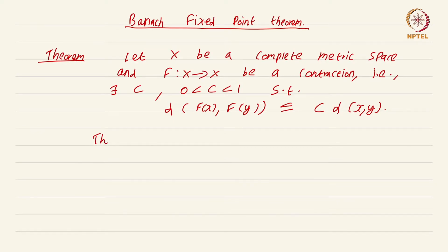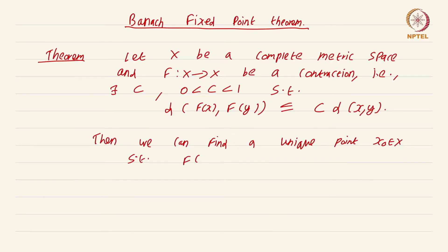The conclusion is then we can find a unique point x₀ in X such that f(x₀) = x₀. So there is a unique fixed point for the mapping f whenever the mapping f is a contraction. The completeness of the space is very crucial, which will become very clear in the methodology of proof.